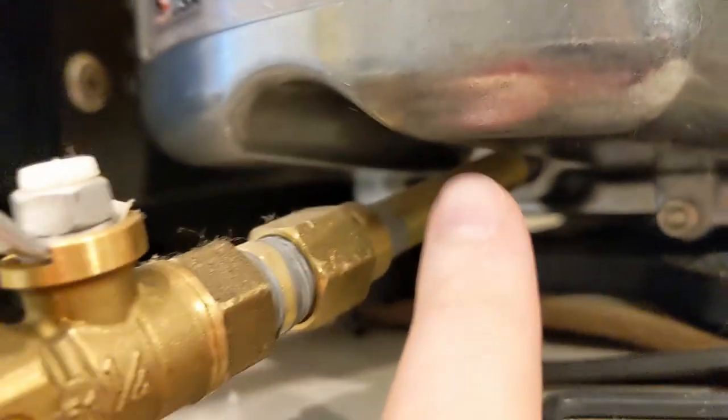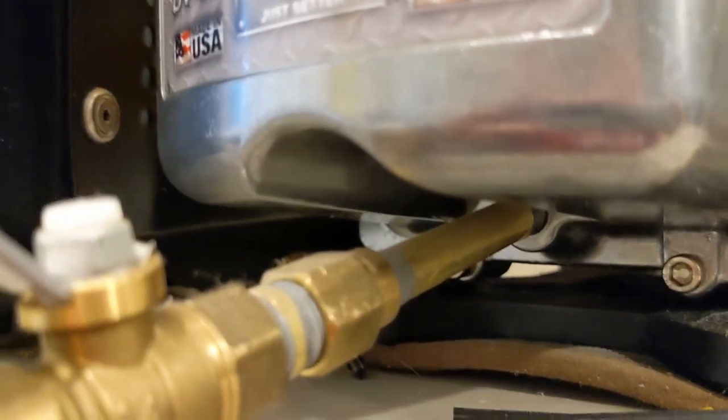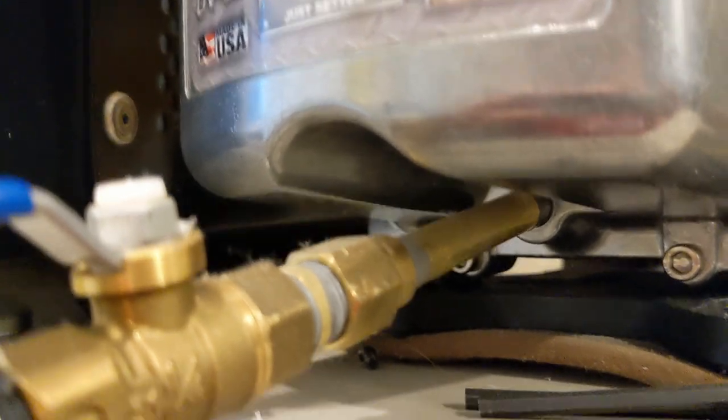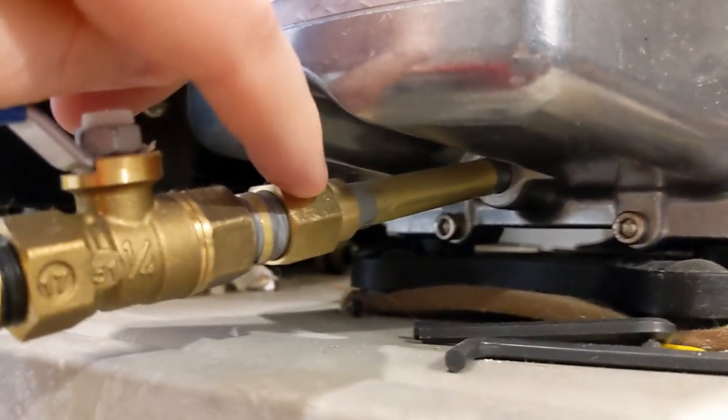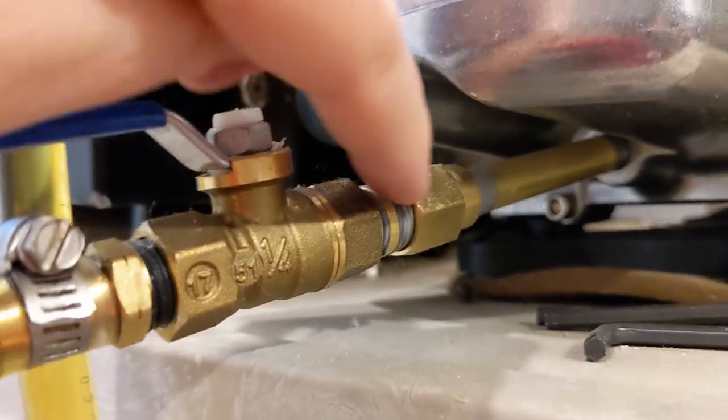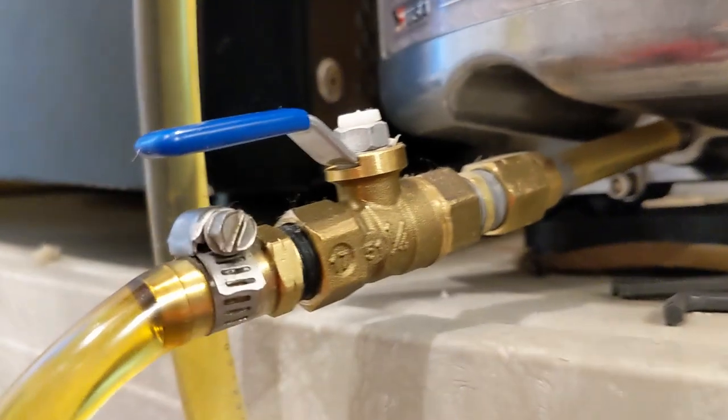So we took out the oil exit plug, which is where you would drain the oil, and replaced it with this threaded copper tubing, and then we attached a valve because valves are always nice to have so you can control what it's doing.